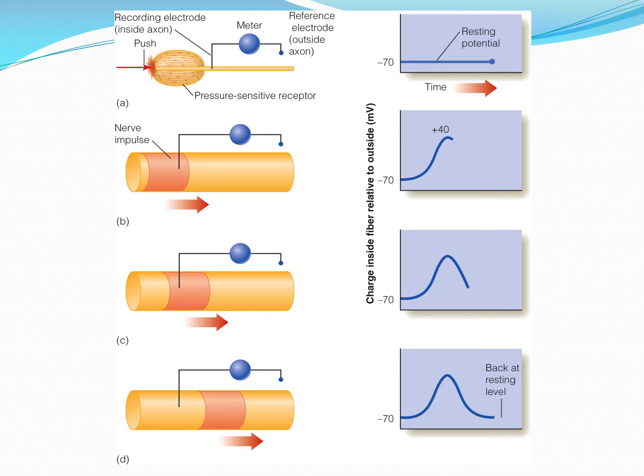When somebody touches us, the touch receptor communicates that and a nerve impulse is sent down the axon. Walking through phases B, C, and D: first we see a rise in charge from negative 70 millivolts up to positive 40 millivolts. Then as the nerve impulse continues to pass by the electrode, the charge goes back down from positive 40 millivolts heading back toward negative 70 millivolts — actually going a tiny bit lower. In phase D, the nerve impulse has passed and we're back at the resting potential of negative 70 millivolts.